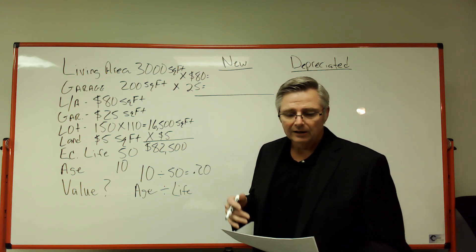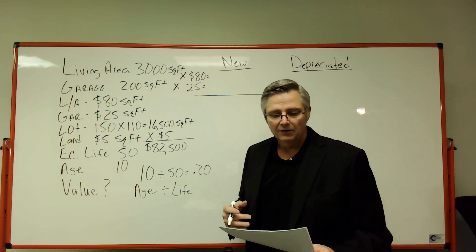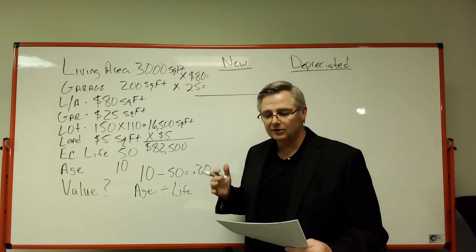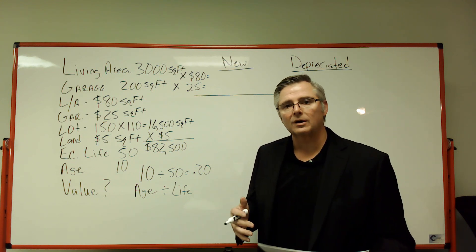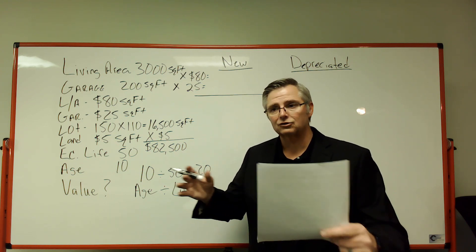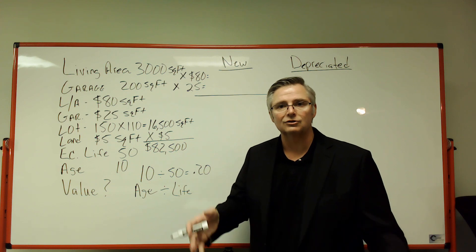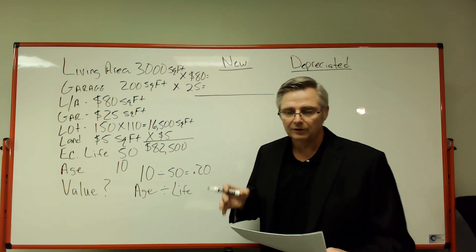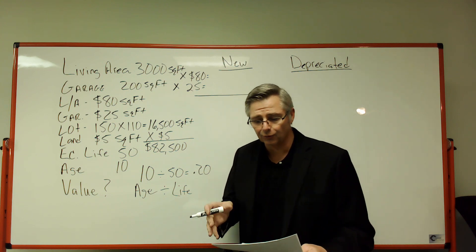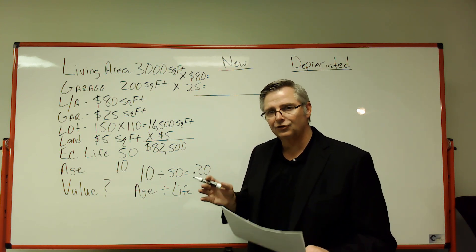The house is 3,000 square feet of living area and 200 square feet of garage space. The lot is 150 by 110 feet. The cost to build the living area is $80 a square foot, and the garage is $25 a square foot. The lot costs $5 a square foot. The economic life of the house is 50 years and the effective age is 10 years.